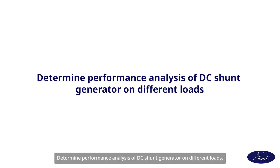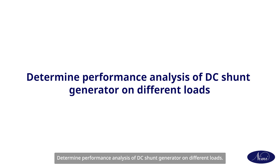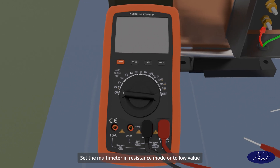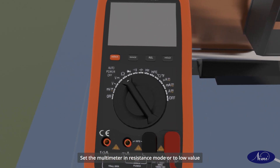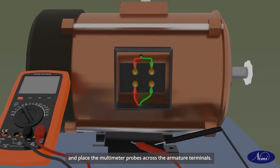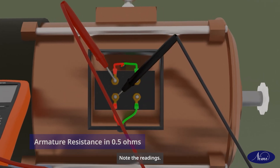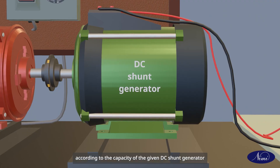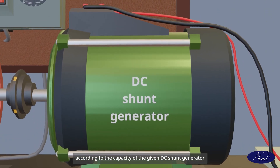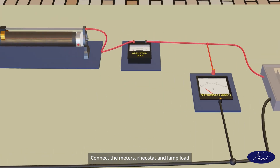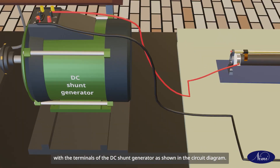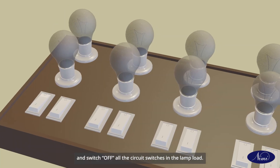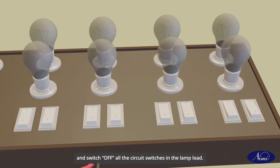Determine the performance analysis of the DC shunt generator on different loads. Measure the armature resistance using a multimeter — set the multimeter in resistance mode or to a low value and place the multimeter probes across the armature terminals; note the readings. Select appropriate cables, switch load, and meters according to the capacity of the given DC shunt generator. Connect the meters, rheostat, and lamp load with the terminals of the DC shunt generator as shown in the circuit diagram.